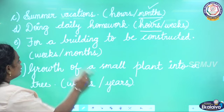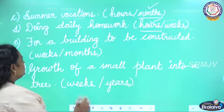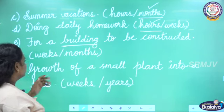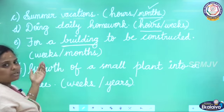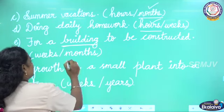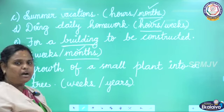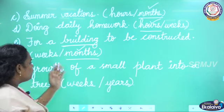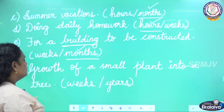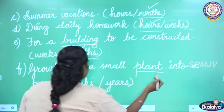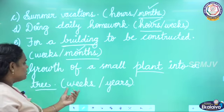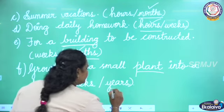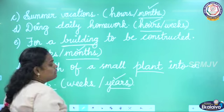Next: time for a building to be constructed. We cannot construct a house within a week, so it takes months — about three months. Next: growth of a small plant into a tree. A plant grows into a tree over years, not weeks. So the answer is years.